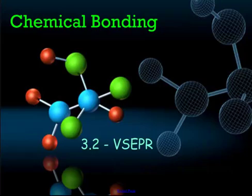And this is 3.2, this is the VSEPR theory. VSEPR stands for valence shell electron pair repulsion.